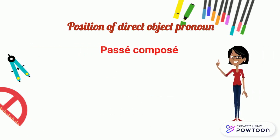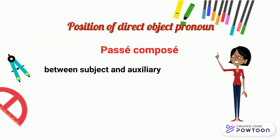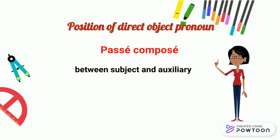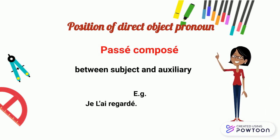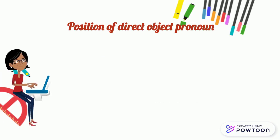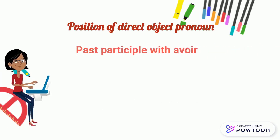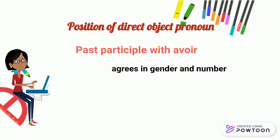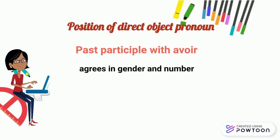At the passé composé, the direct object pronoun is placed between the subject and the auxiliary. For instance, je l'ai regardé — I watched him. Please note that the past participle used with the auxiliary avoir agrees in gender and number with the direct object pronoun.